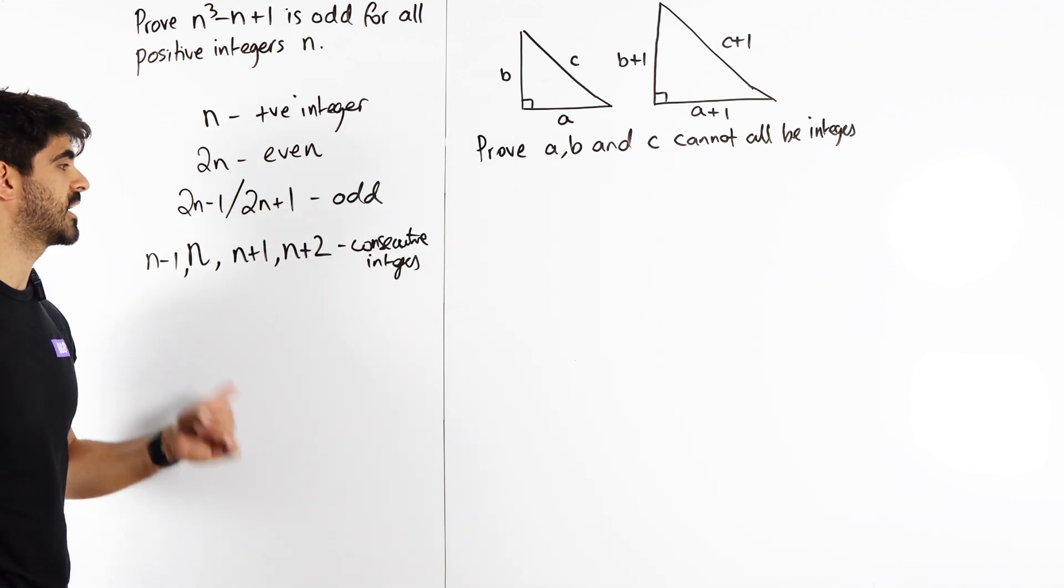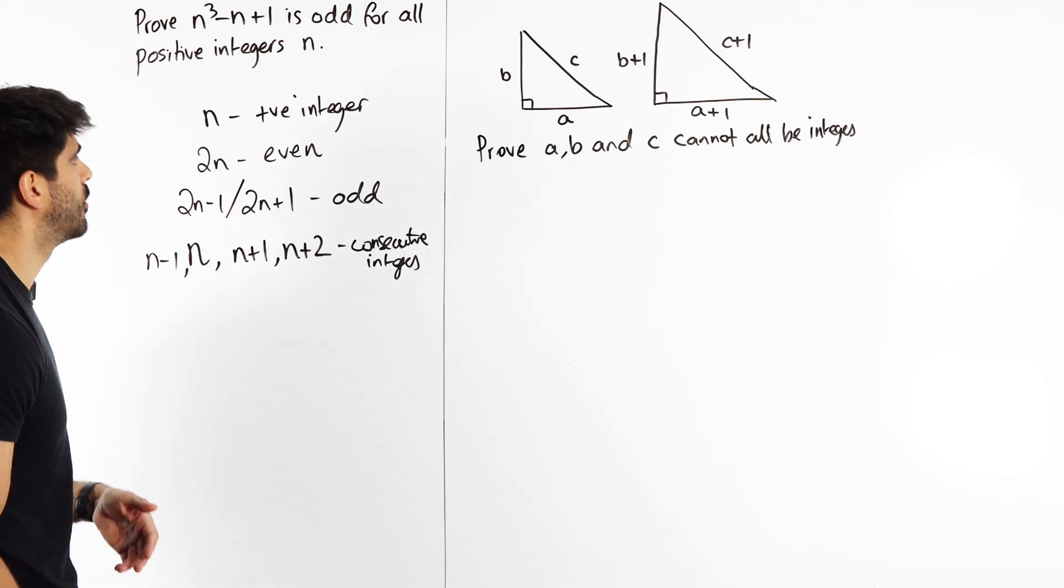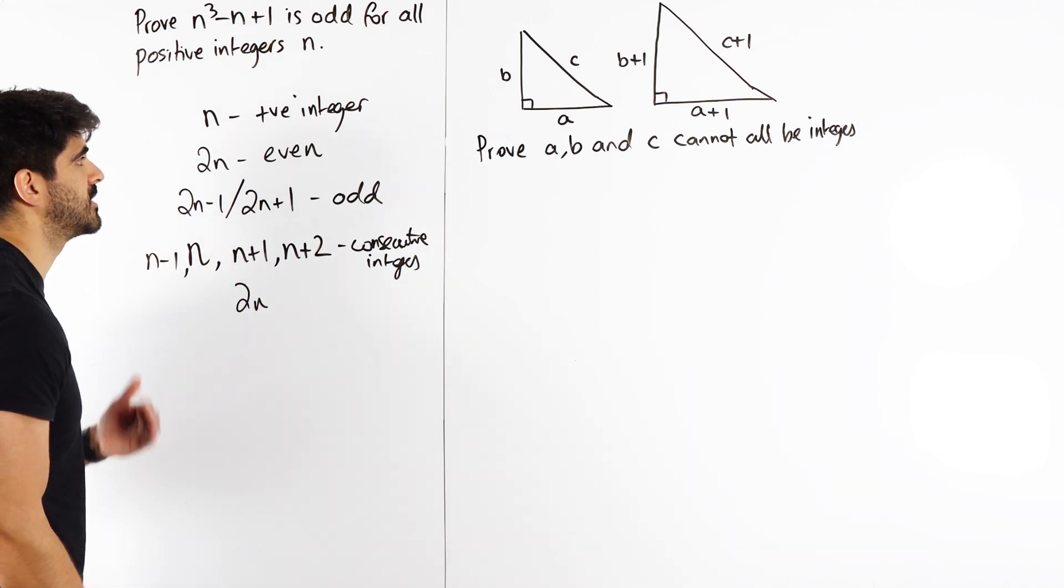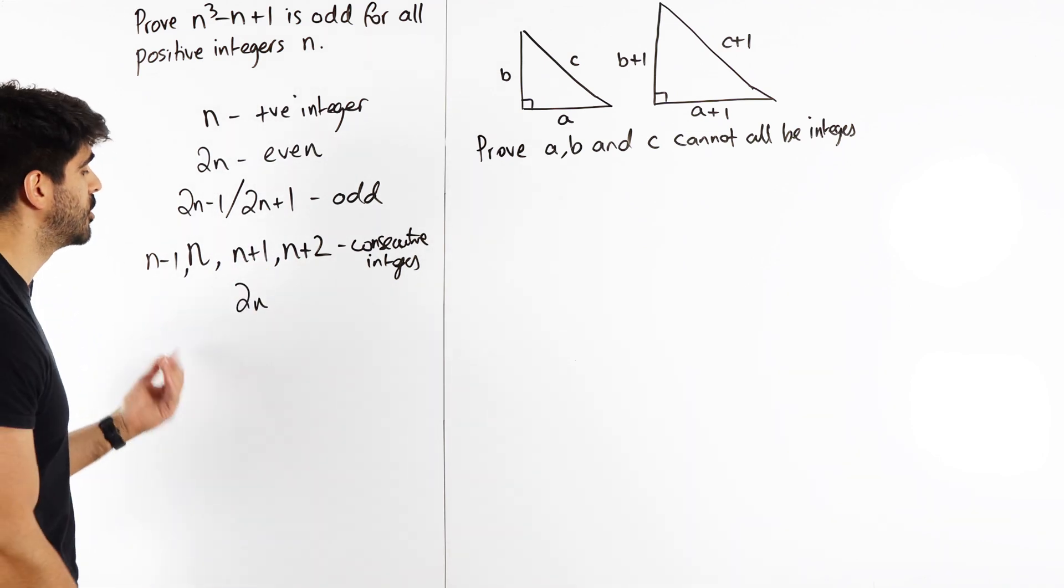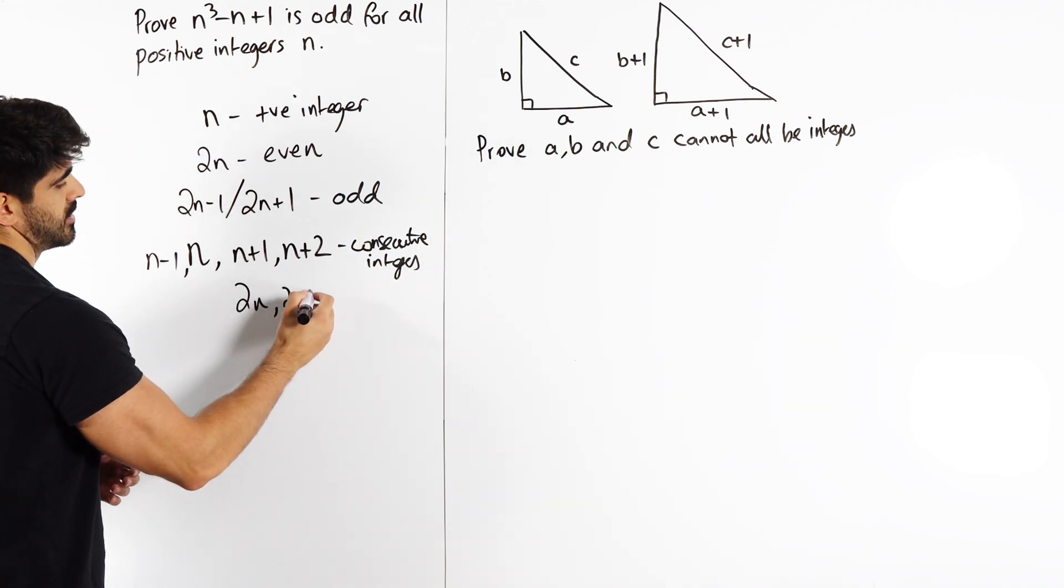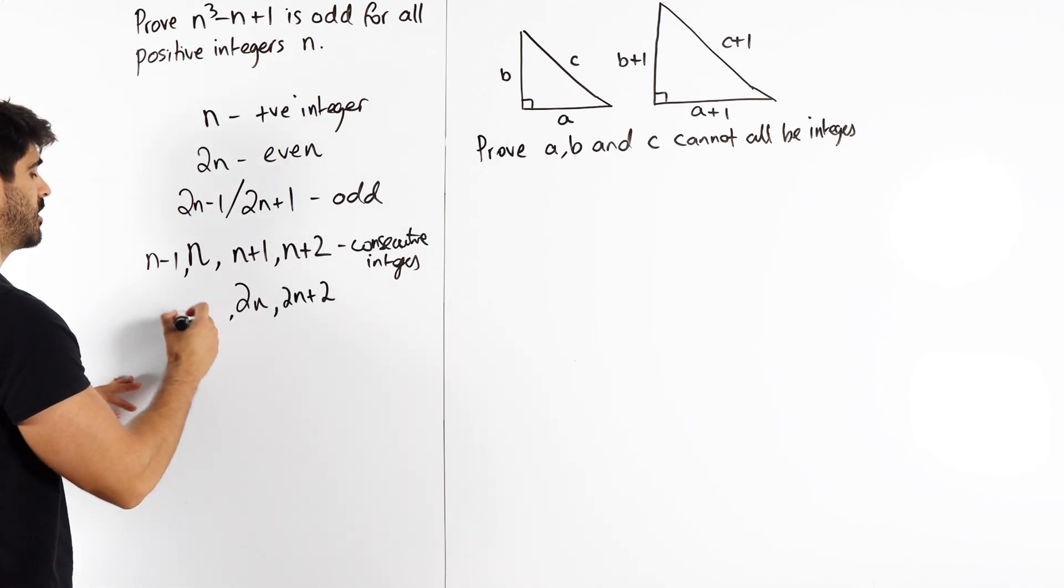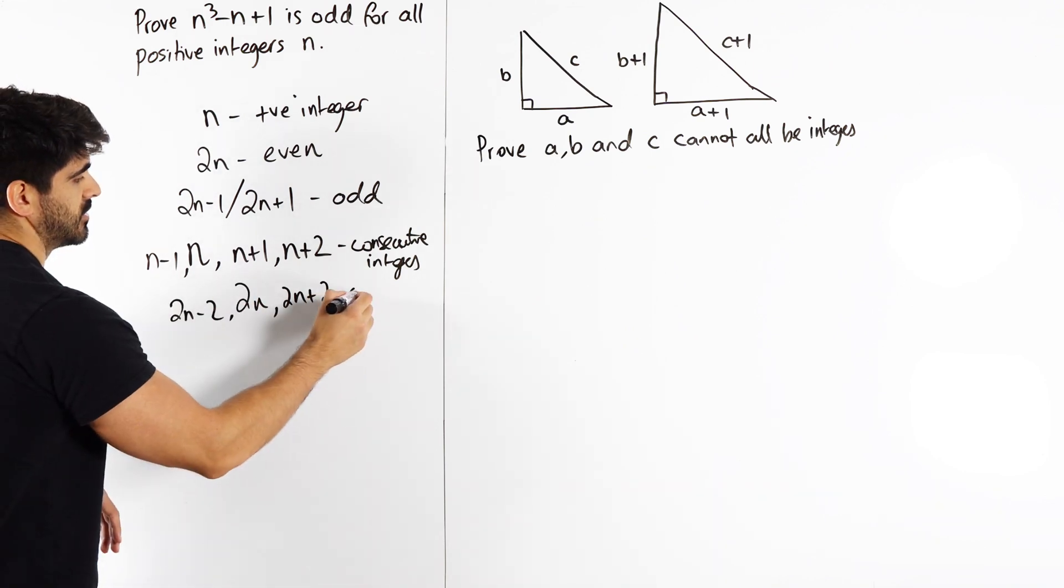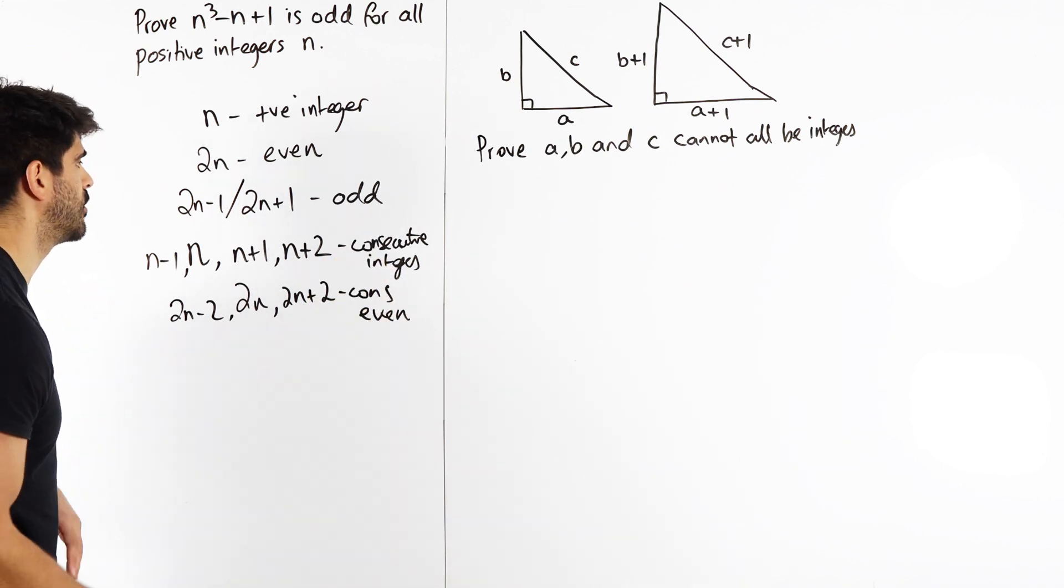But then we have to look at consecutive even numbers and consecutive odd numbers. Well, if an even number is 2n, there would be a consecutive even number. If you have 2, 4, 6, 8, you know that the even numbers differ by 2. So 2n + 2 is a consecutive even number. We could go the other way: 2n - 2, etc. So these are consecutive evens.